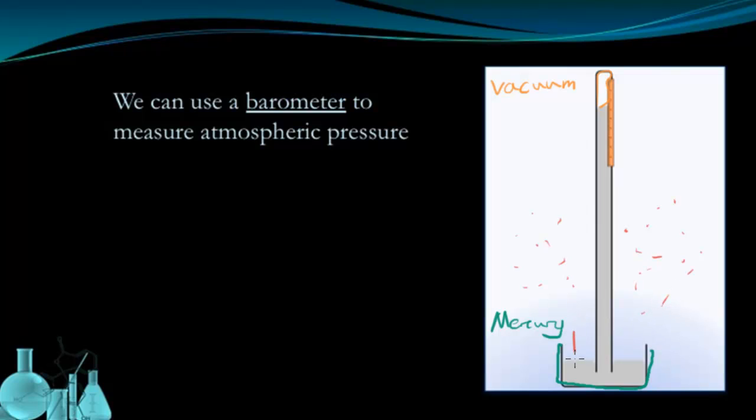So at sea level, you would have a certain amount of pressure based on their collisions with the surface of the mercury. And that amount of pressure would drive the mercury up this vacuum tube to a certain height.